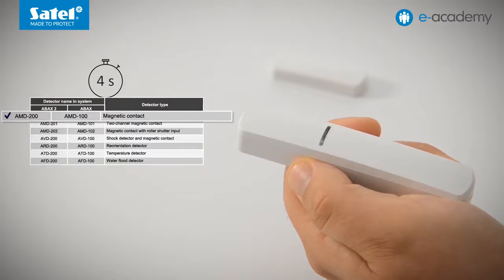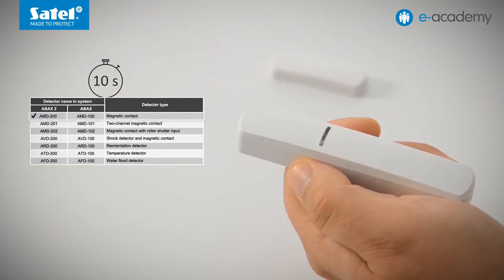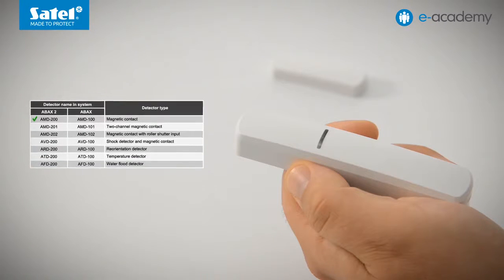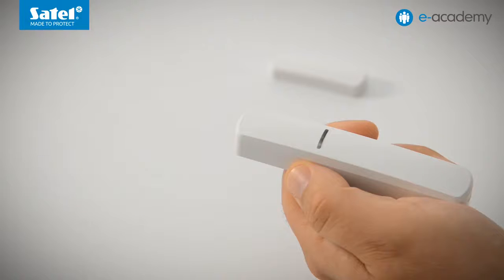OK, a single flash, so magnetic contact mode. For the last selected mode to be remembered, you must wait about 10 seconds. A single flash of the LED has confirmed the detector is programmed as magnetic contact. Subsequent taps on the enclosure will not change the detector settings anymore. To change the detector type again, you would have to remove the battery and repeat the entire process.